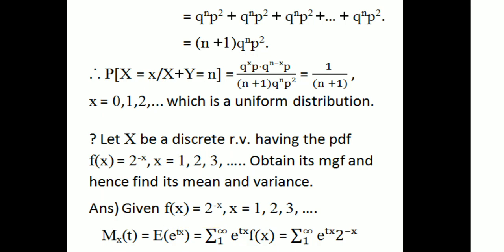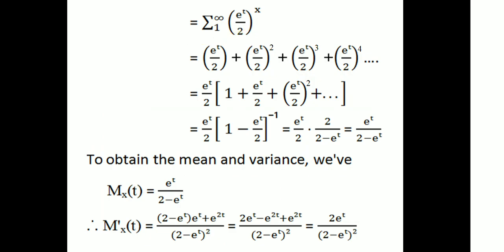The MGF is M_X(t) = summation from x = 1 to infinity of e^(tx) · 2^(-x) = summation of (e^t/2)^x. For x = 1, 2, 3, ..., this equals (e^t/2) + (e^t/2)² + (e^t/2)³ + ... = (e^t/2) · [1 + (e^t/2) + (e^t/2)² + ...], which is a geometric series. This equals (e^t/2) · (1 - e^t/2)^(-1) = e^t / (2 - e^t). So the moment generating function is M_X(t) = e^t / (2 - e^t).